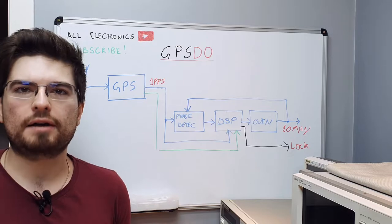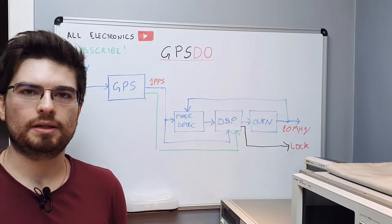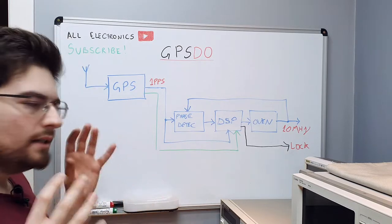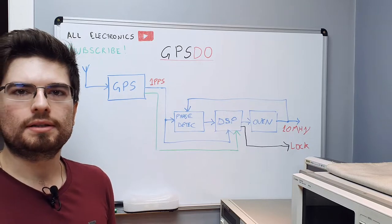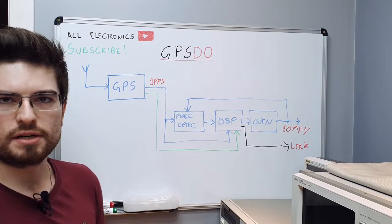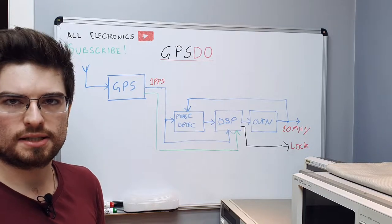So guys, this is the basic block diagram of a GPS Disciplined Oscillator. And it looks like a PLL, but it's not the same and we have some big difference here from a PLL that you're gonna understand now.